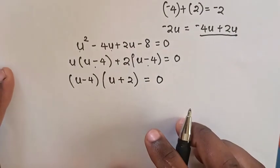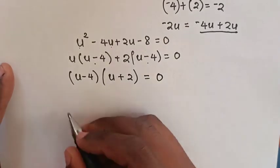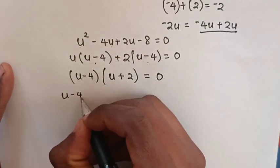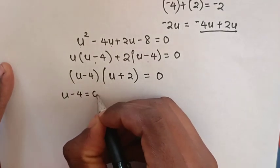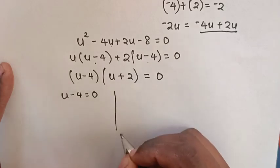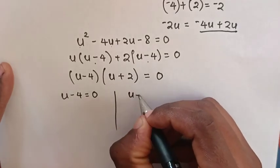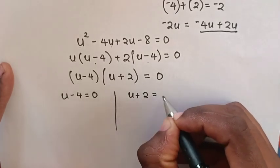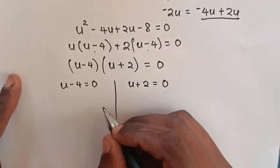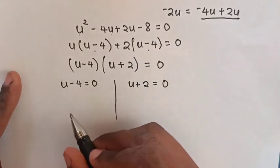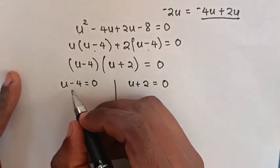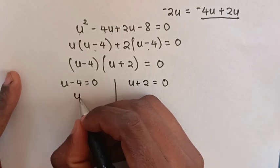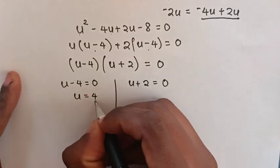Then we have 2 cases: u minus 4 equals 0, and u plus 2 equals 0. In the first case, when we take negative 4 to the right side, it will be u equals 4.